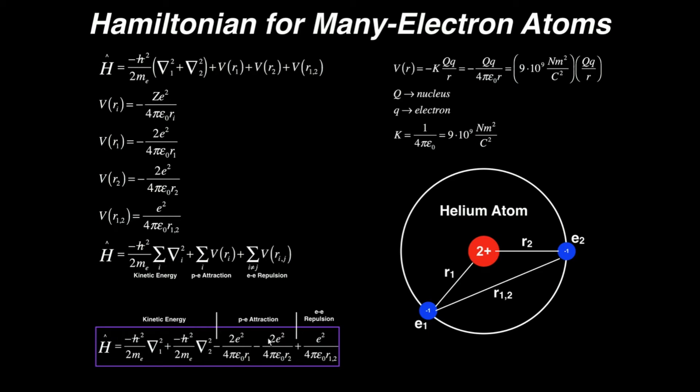The last term is our electron-electron repulsion term, which is going to be positive. That's the columbic potential energy between two electrons. And you're just going to add all of these up, and that's your Hamiltonian, which you'd need a computer to solve analytically.